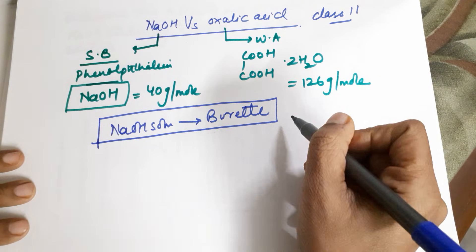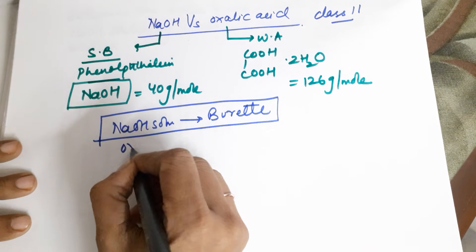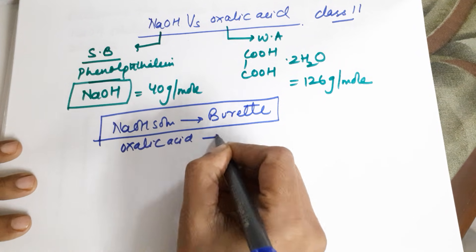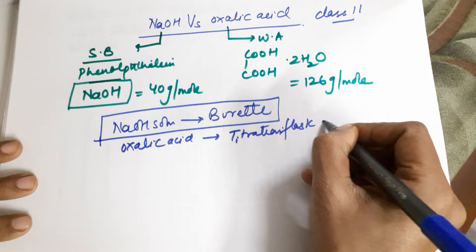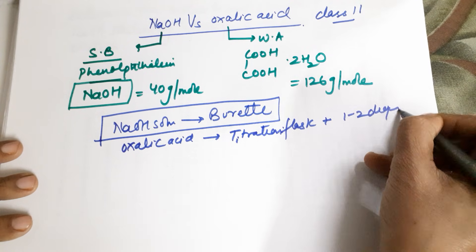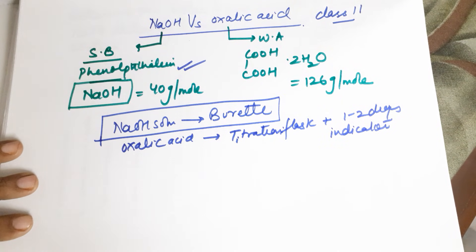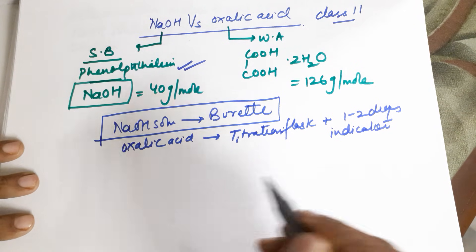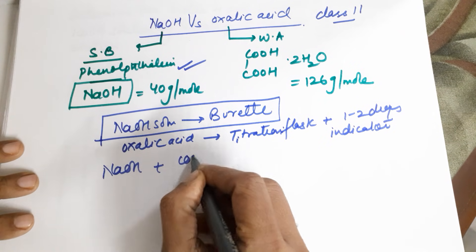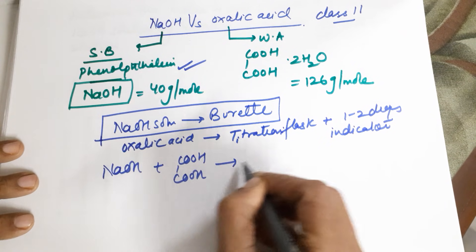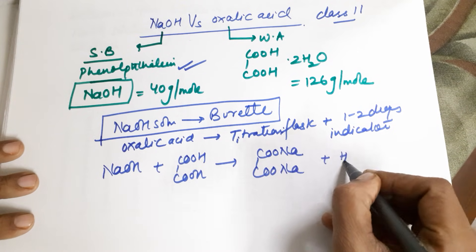In this particular video, you are going to discuss the calculation part only. So your NaOH solution is in the burette, which means your oxalic acid would be in the titration flask, plus you would add 1 to 2 drops of the indicator which is phenolphthalein and you begin with your titration. Before I move ahead, we need to see the equation for this particular titration. You have NaOH plus oxalic acid to give you sodium oxalate and water.